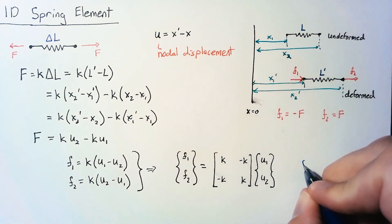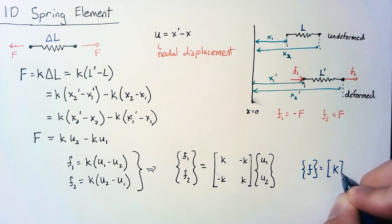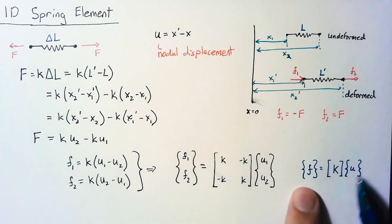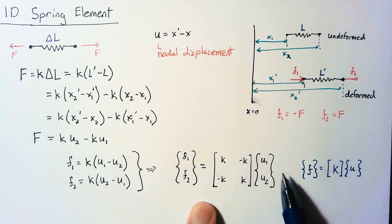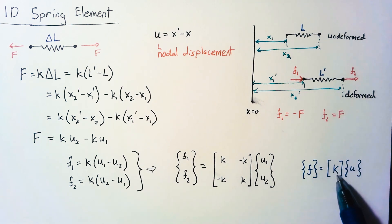Oftentimes just to simplify whenever we have complex situations we'll say something along the lines of we have a force vector written like so which is equal to a stiffness matrix multiplied by a displacement vector. So this is just a shorthand way of writing out all of this. And oftentimes we'll have to expand out our stiffness matrix and most of the work in the finite element method is defining this stiffness matrix.